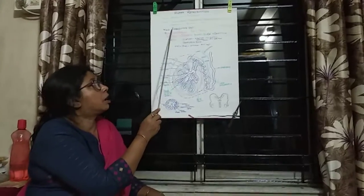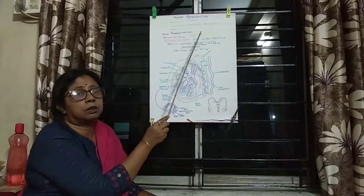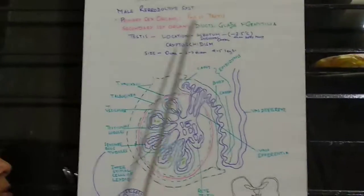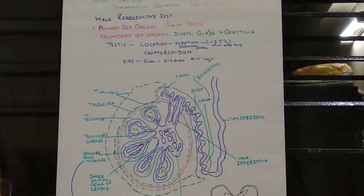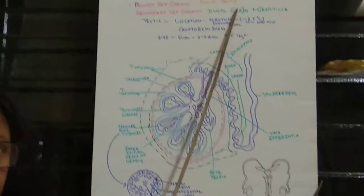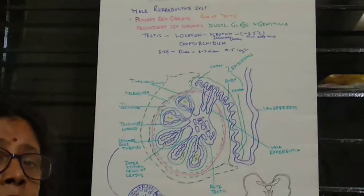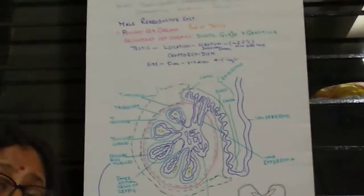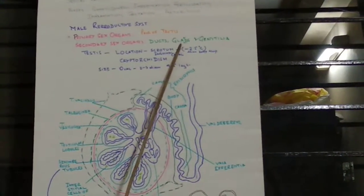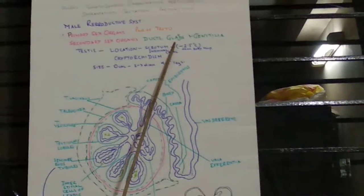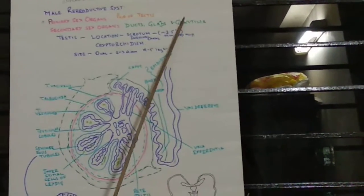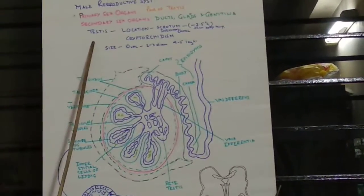Today we will mainly concentrate our discussion on the male reproductive system. The male reproductive system contains mainly two parts: primary sex organs and secondary sex organs. The primary sex organs are the ones that produce the male gamete — sperm — and that primary sex organ is the pair of testes. Secondary sex organs do not directly produce gametes but help in reproduction; they include the duct system to transfer sperm, glands that nourish and aid sperm, and external genitalia which help in the release of sperm.